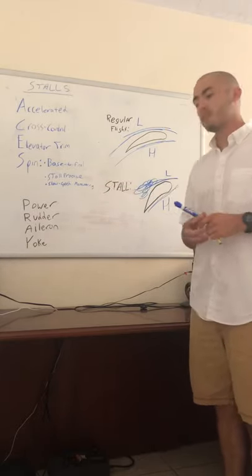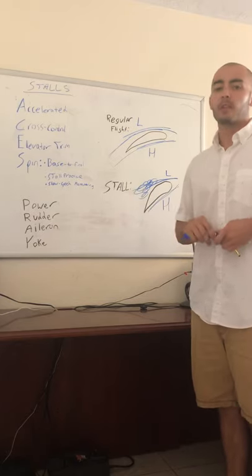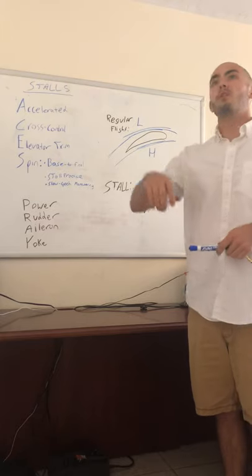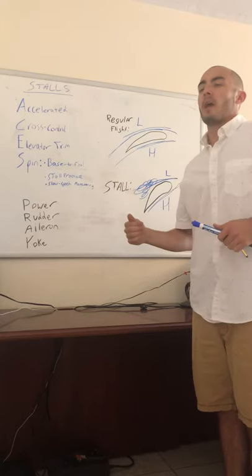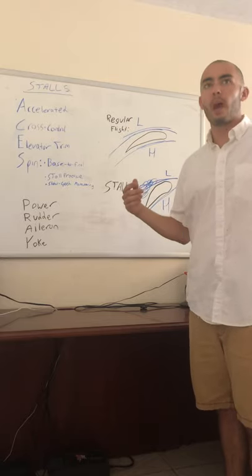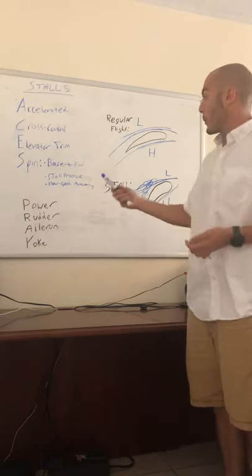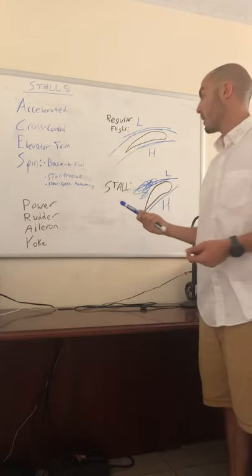ATC tells you to keep it tight, keep the base tight, there's traffic on two mile final. You turn in too far and your low wing isn't getting enough airflow while your high wing is, therefore you go into that spin movement. And stall practice - as CFIs you have to have your spin training.